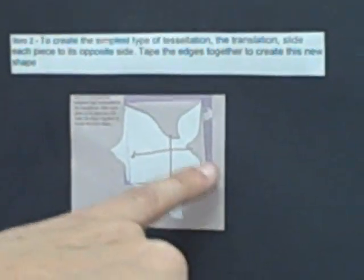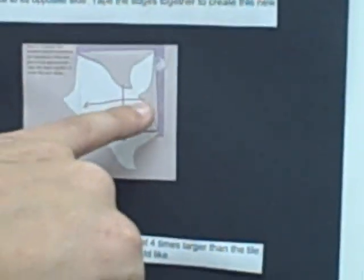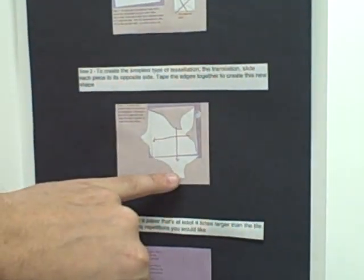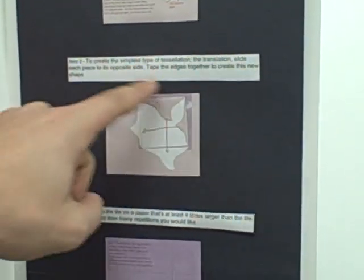Your step two, to create the simplest type of tessellation, the translation, slide each piece to its opposite side. You see right here, you slide that piece you cut out over to this side, and that piece up top you cut out, you slide it to the bottom side. And then the part in the white is going to be your starting block.